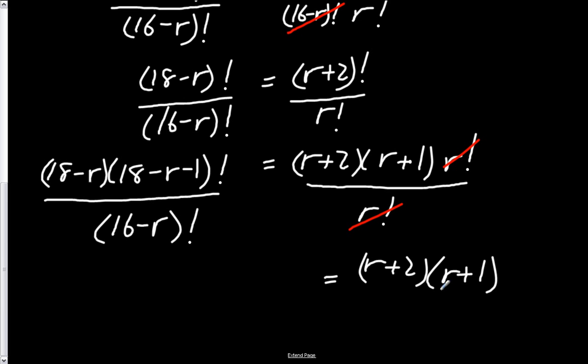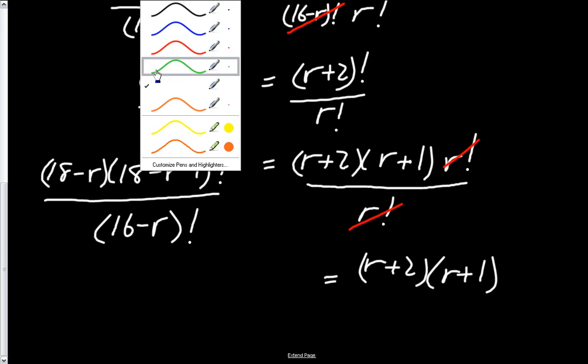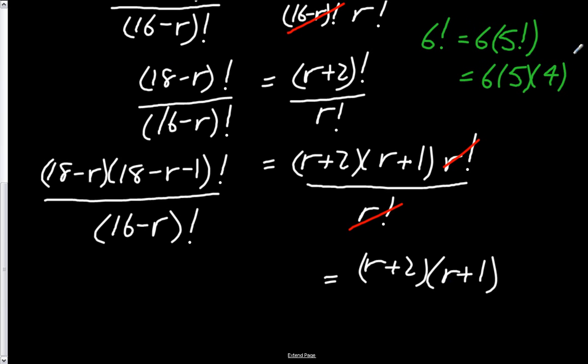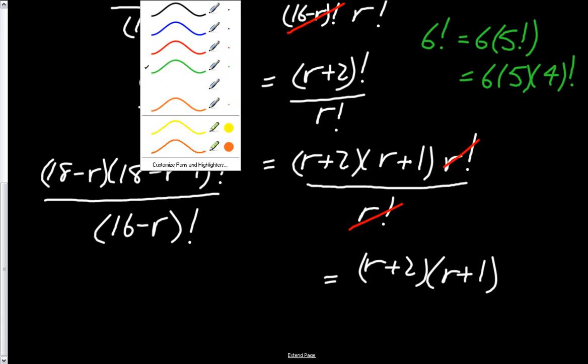Now, on the other side — let me remind you of something over here in green. If you have an expression like 6 factorial, you can write that as 6 multiplied by 5 factorial, or 6 times 5 times 4 factorial, and so on as many times as you need. Basically, by subtracting 1 from the number, you can always keep reducing the factorial down. That's what I'm doing in both of these expressions.